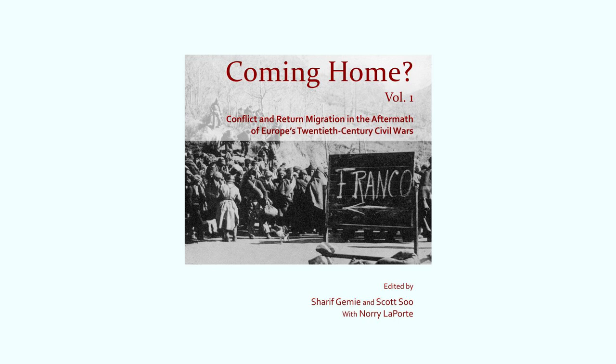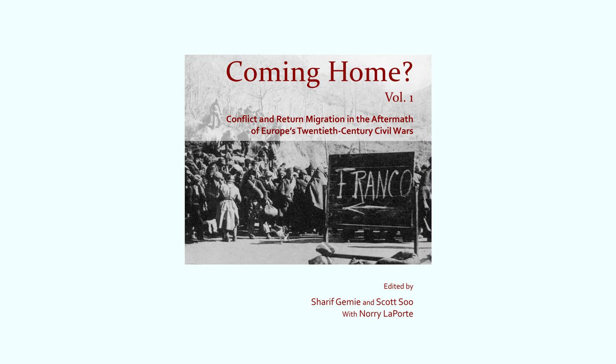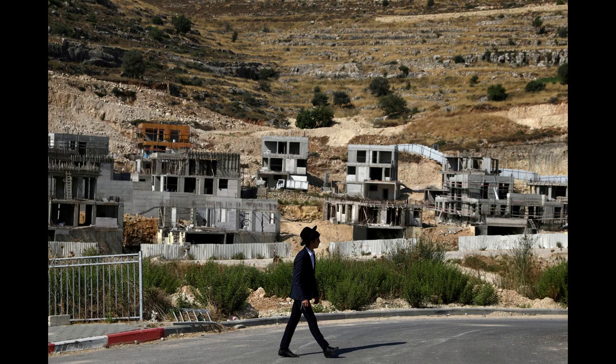The war also created new challenges for Israel. It now had to govern a large Palestinian population in the West Bank and Gaza Strip, which posed significant political and security challenges. The occupation of the territories also led to the establishment of Israeli settlements, which are considered illegal under international law.